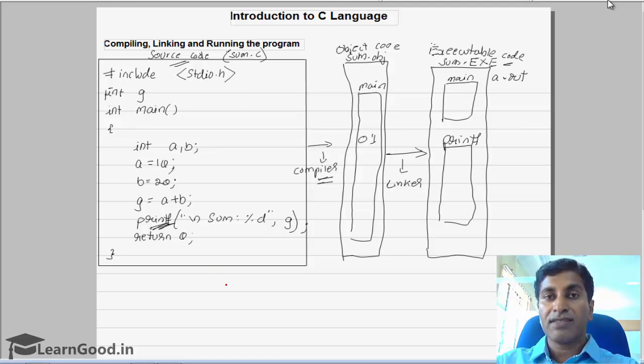The errors which you get during compiling we call compiler errors. Those errors occur if you violate any language rules. Such errors come under the category of compiler errors or syntax errors. In the same way, while converting from object file to an executable file...